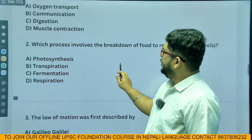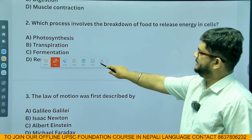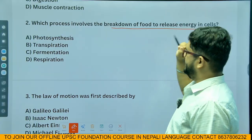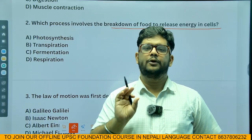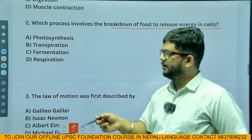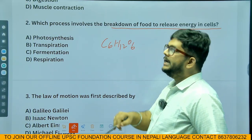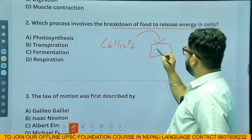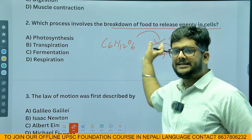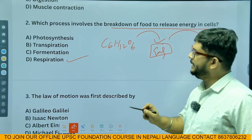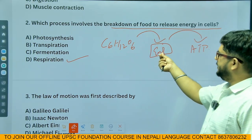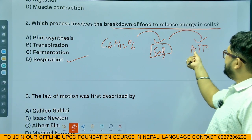Next question: which process involves the breakdown of food to release energy in cells? Food — glucose — is naturally built through the process of photosynthesis in the presence of sunlight. Glucose, chemical formula C6H12O6, is broken down and the energy produced is stored in the form of ATP — Adenosine Triphosphate. The name of this process is respiration.